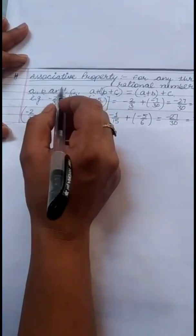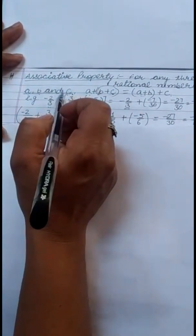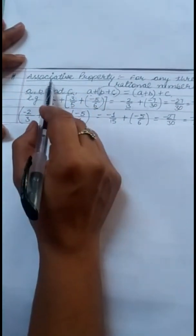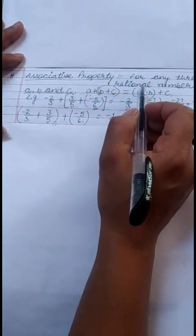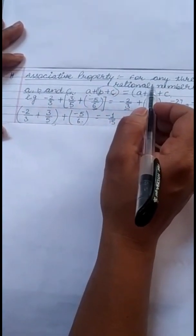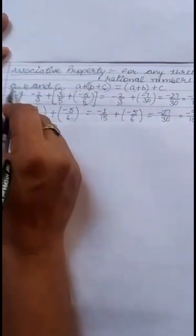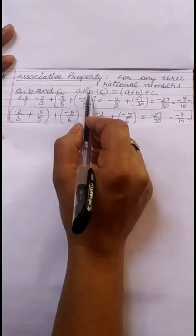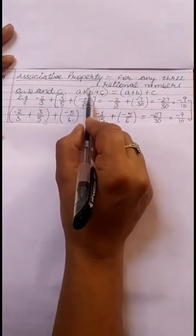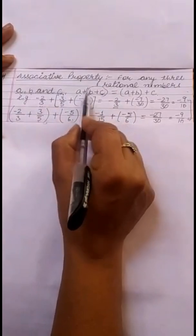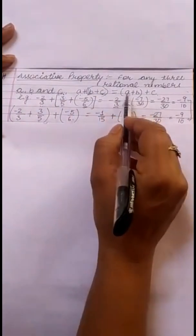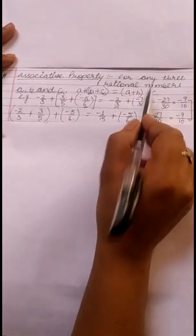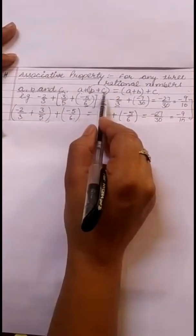Good morning students. Last day we discussed two properties: Closure Property and Commutative Property. Now next is Associative Property. Associative property is a little bit similar to commutative property, but in this property we take three rational numbers A, B, and C. The order of addition is: first we add B plus C, then add the result to A. In the second step, if we add A plus B first, then add C, both answers remain the same. It means addition can be done in any order.